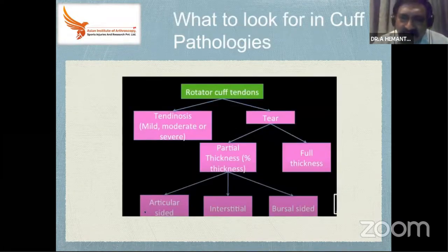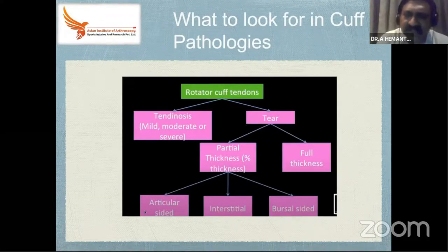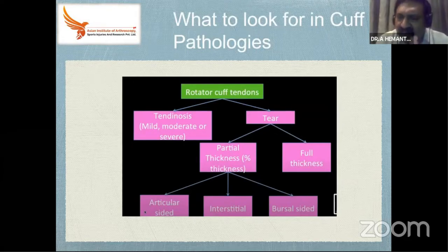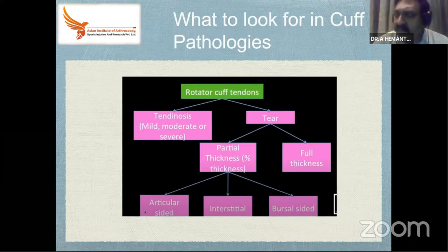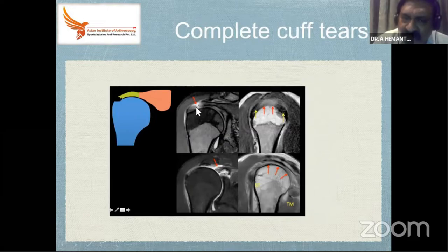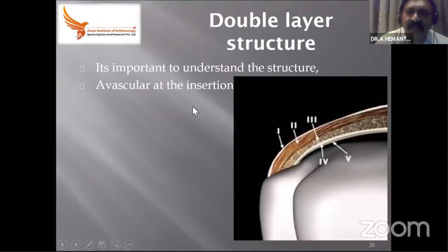For cuff pathologies from an examination standpoint: there is tendinosis of different grades, there is a partial tear, and there is a complete tear. In partial tears there are articular side tears, interstitial side tears, and bursal side tears — these are theoretically very important for long questions. A complete tear looks like a complete discontinuity — it can be at the tendon, at the footprint, or at the musculotendinous junction.